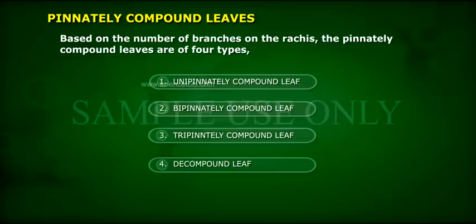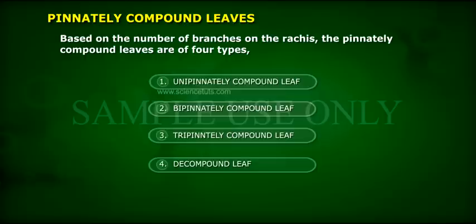Based on the number of branches on the rachis, the pinnately compound leaves are of four types: 1. Unipinnately compound leaves, 2. Bipinnately compound leaves, 3. Tripinnately compound leaf, 4. Decompound leaf.